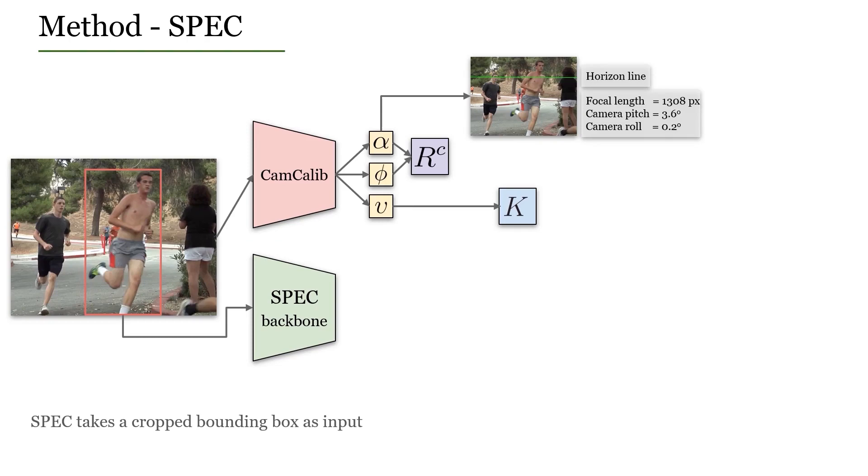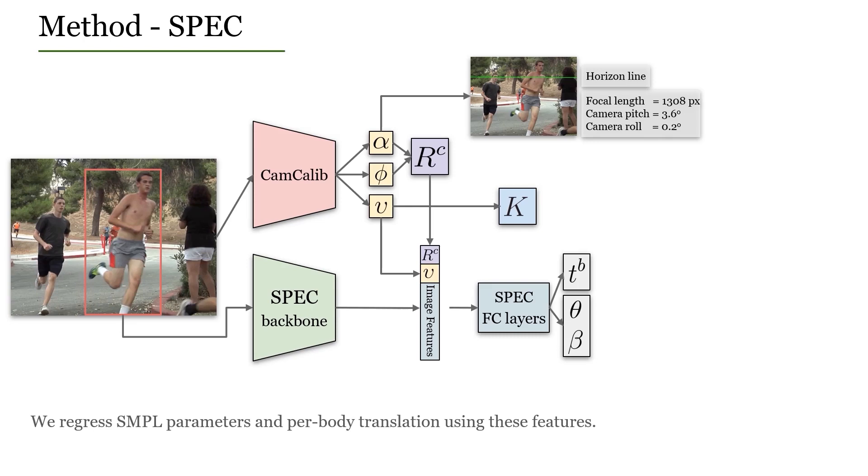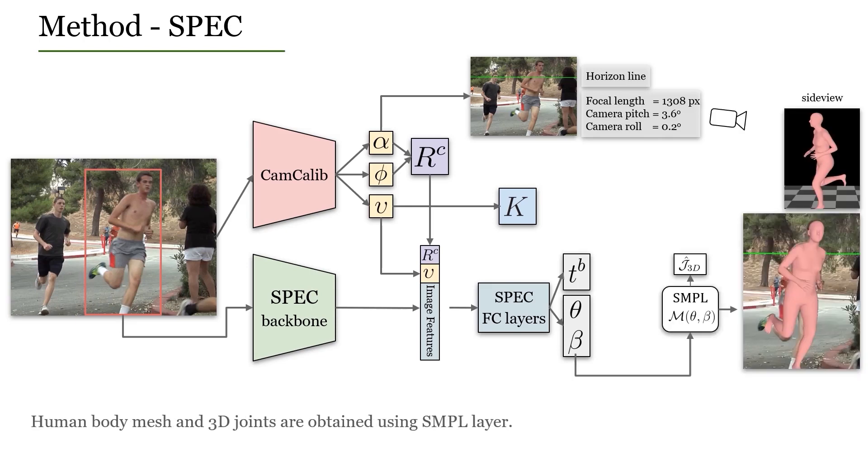For human body regression, SPEC takes a cropped bounding box as input and extracts image features. We concatenate the image features with the estimated camera parameters. From this, we regress SMPL parameters and per-body translation. The human body mesh and 3D joints are obtained using a SMPL layer.